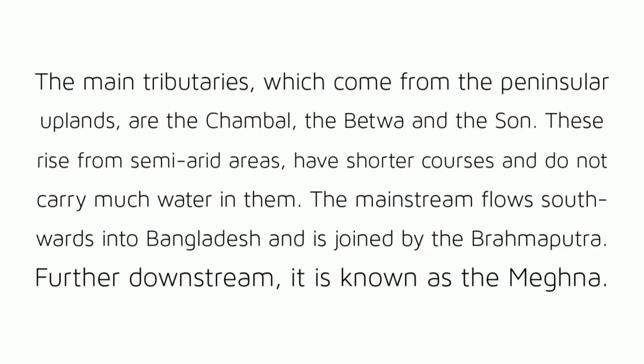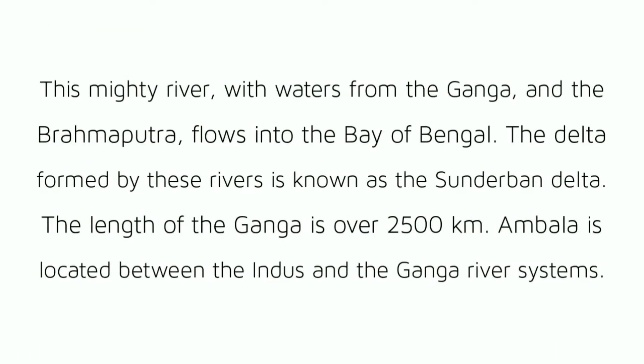The main tributaries which come from the peninsular uplands are the Chambal, the Betwa and the Son. These rise from semi-arid areas, have shorter courses and do not carry much water. The main stream flows southwards into Bangladesh and is joined by the Brahmaputra; further downstream it is known as the Meghna. This mighty river, with waters from the Ganga and the Brahmaputra, flows into the Bay of Bengal. The delta formed by these rivers is known as the Sundarbans delta. The length of the Ganga is over 2500 km. Ambala is located between the Indus and the Ganga river systems.